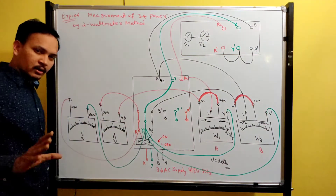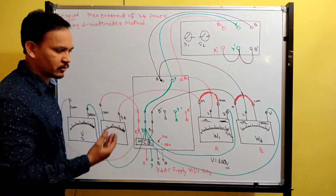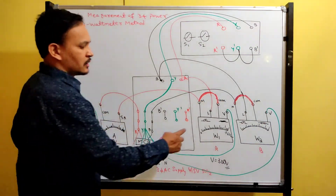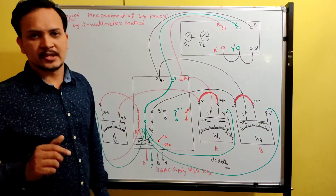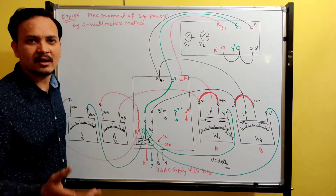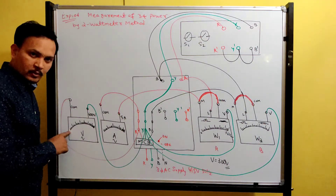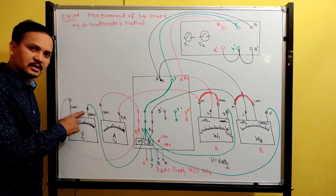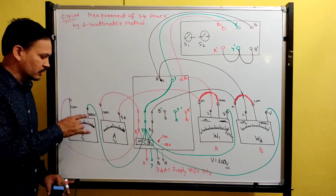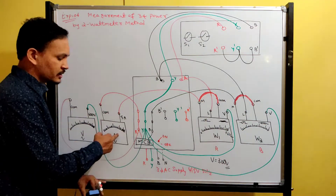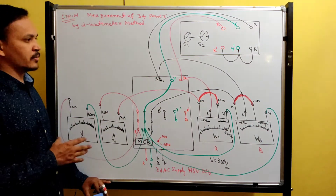Once the connection is done, call the professor or inspector and explain. Tell them: I calculated W1 and W2 wattmeter constants, and got such-and-such values. Constants are required because with a small range we can measure high power — that is the multiplying factor. For the voltmeter: if the full scale reading is 300V and the selector terminal is 600V, the voltmeter constant = voltage selected ÷ full scale reading. Ammeter constant = current selected ÷ full scale reading.